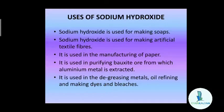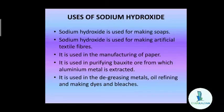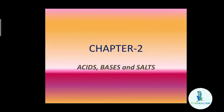The uses of sodium hydroxide include: making soaps and detergents, making artificial textile fibers such as rayon, manufacture of paper, purifying bauxite ore from which aluminium metal is extracted, degreasing metals, oil refining, and making dyes and bleaches. In the next video, more types of chemical compounds will be discussed.